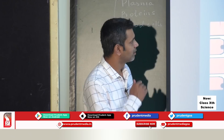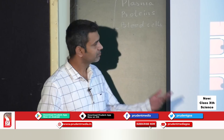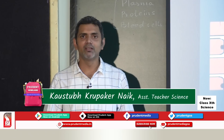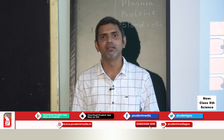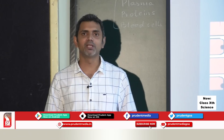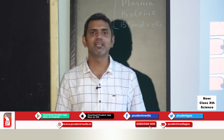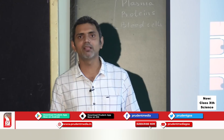Lymph is also known as tissue fluid. We have completed transportation in human beings. We learned about blood — red blood cells, white blood cells, plasma, and platelets — and the human heart with four chambers. Blood vessels are of three types: arteries, veins, and capillaries. Let us now understand the differences between arteries and veins.